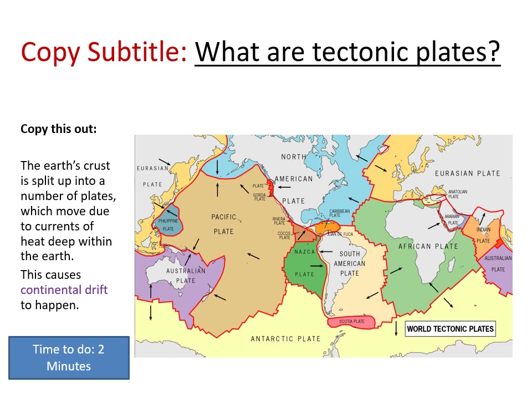Okay, another subtitle please, up against the margin: 'What are tectonic plates?' Then copy those two sentences: 'The earth's crust is split up into a number of plates which move due to currents of heat deep within the earth. This causes continental drift to happen.' Continental drift — think about what the word continental means: it's to do with the continents. And drift means moving. So continental drift means the movement of the earth's surface. If you look at the map, the arrows show the directions that those particular plates are moving in. Pause the video and copy those down.